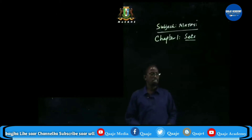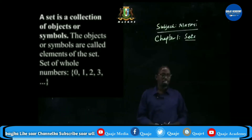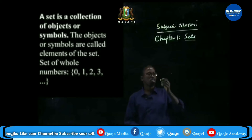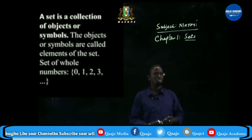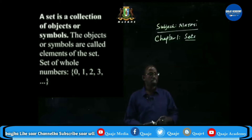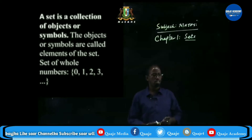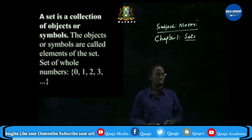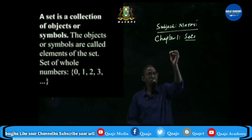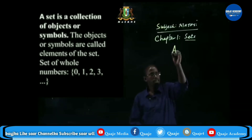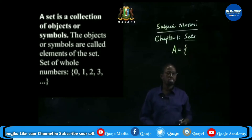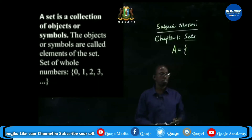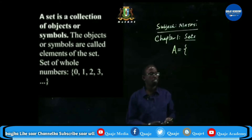Now, a set is a collection of objects. The objects or symbols are called elements of the set. The objects can be numbers or letters.